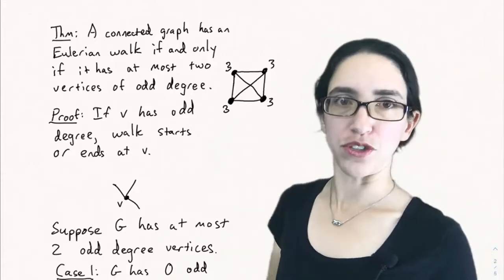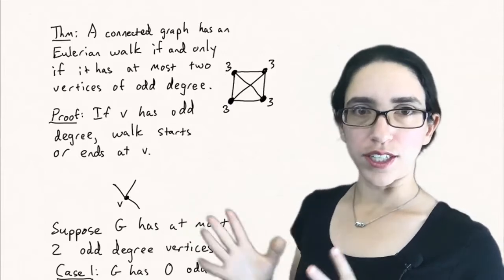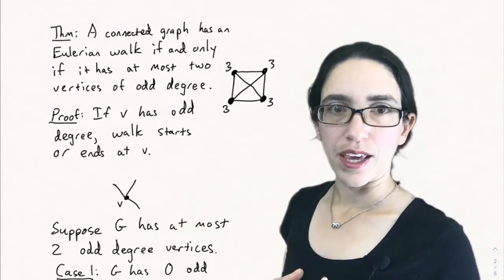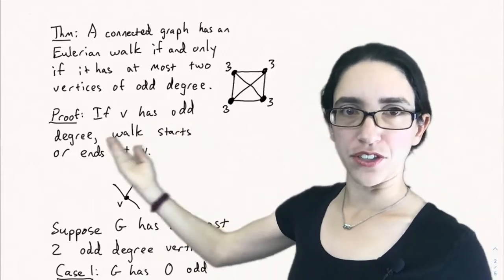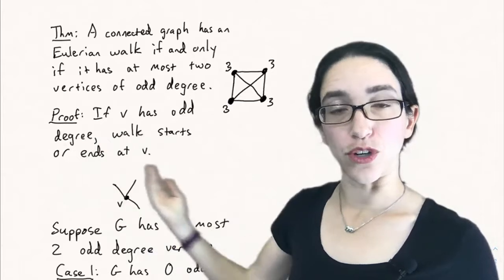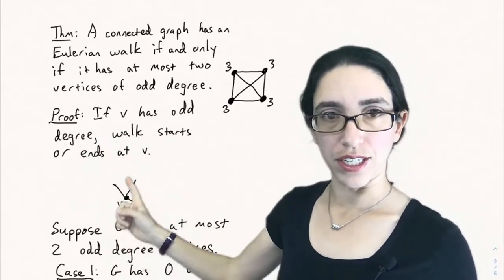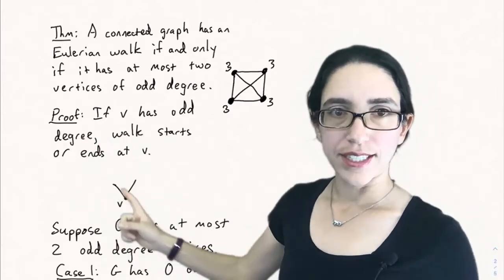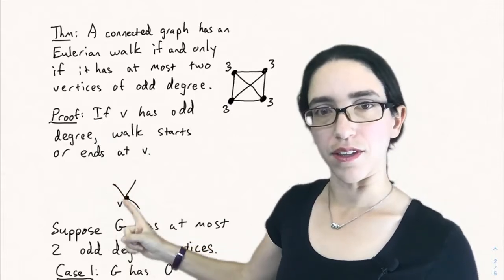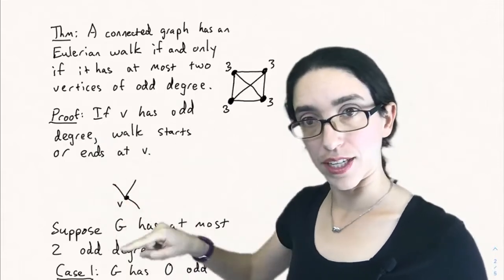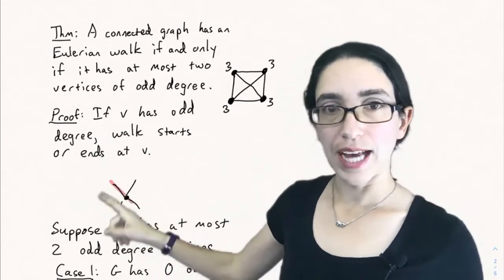And let's see why this theorem is true in general. First, let's show that if you have a vertex of odd degree, then the walk has to start or end at that vertex. So let's consider a vertex v of odd degree, say it has degree three, and say it doesn't start at that vertex. Say the walk passes through that vertex at some point. It has to cover every edge. It has to pass through this vertex to get these edges.